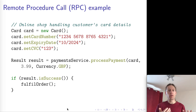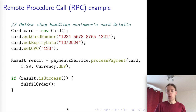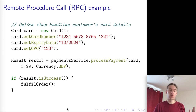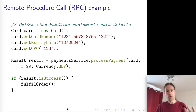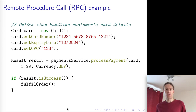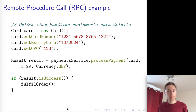Then you call a method on some payment service object — you call the process payment method, give it the card you want to charge, the amount, and the currency. And then depending on whether this is successful or not, you fulfill the order.